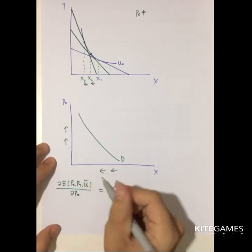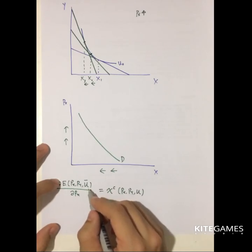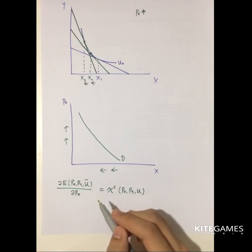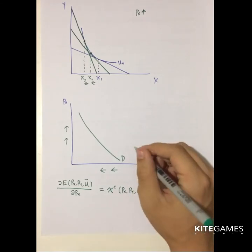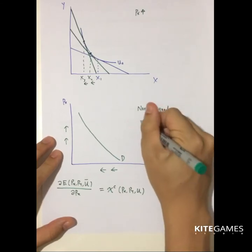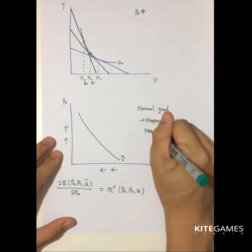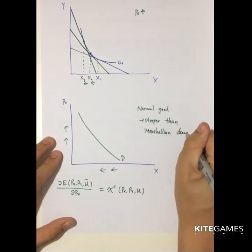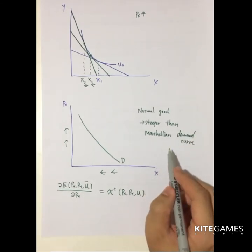Because utility is held constant, the partial derivative of E with respect to U will be zero. That is how you derive the Hicksian demand function. For normal goods, the Hicksian demand curve will be steeper than the Marshallian demand curve, because the Hicksian demand curve ignores the income effect. For normal goods, the positive income effect makes the Marshallian demand curve flatter.